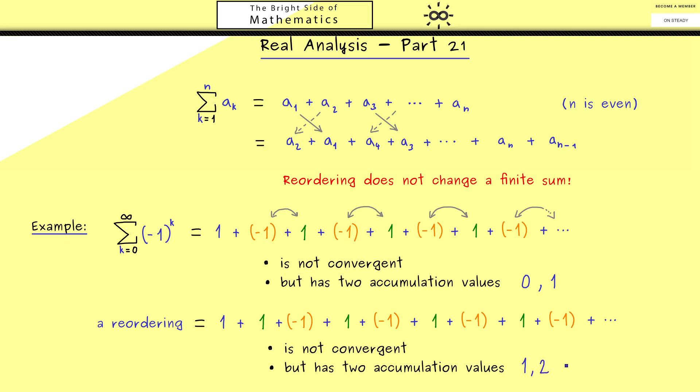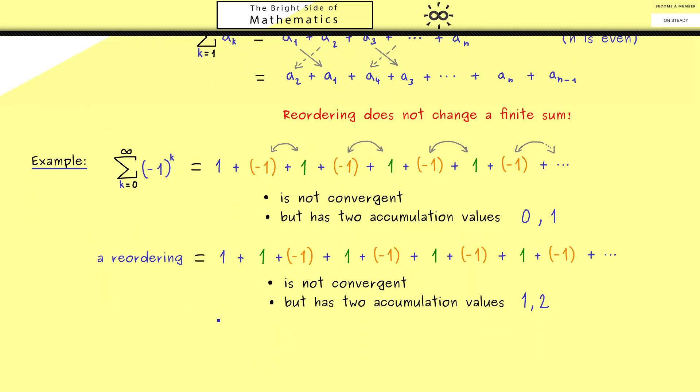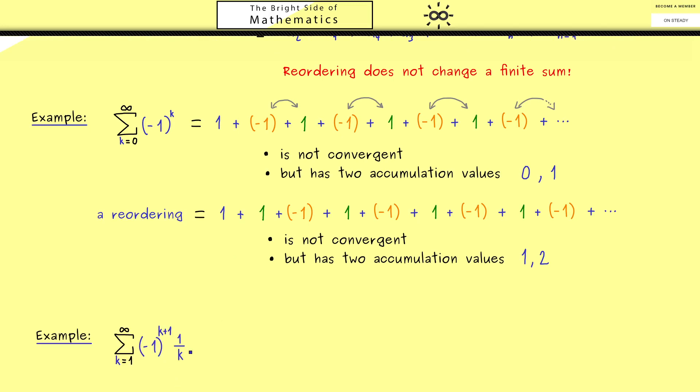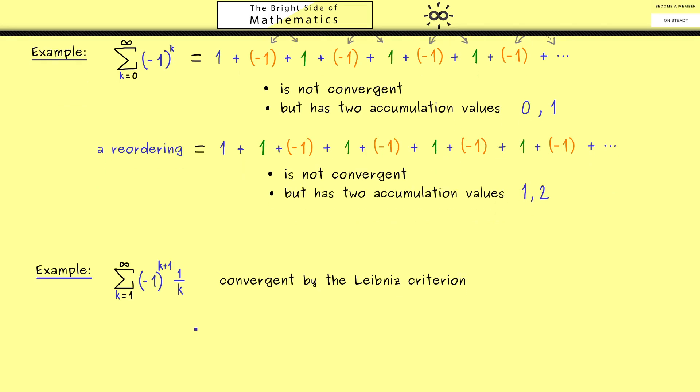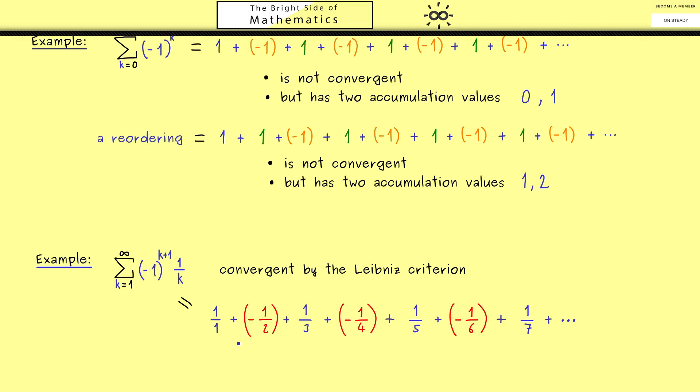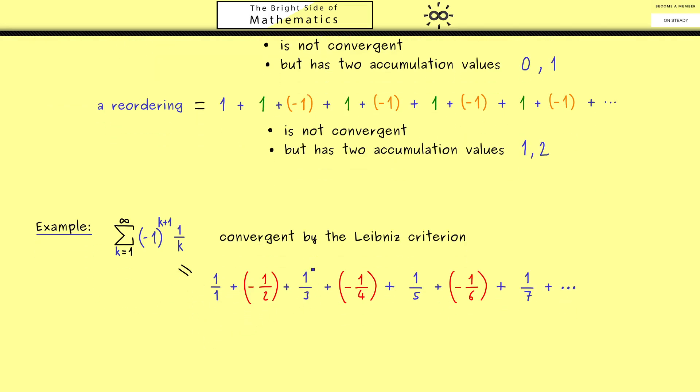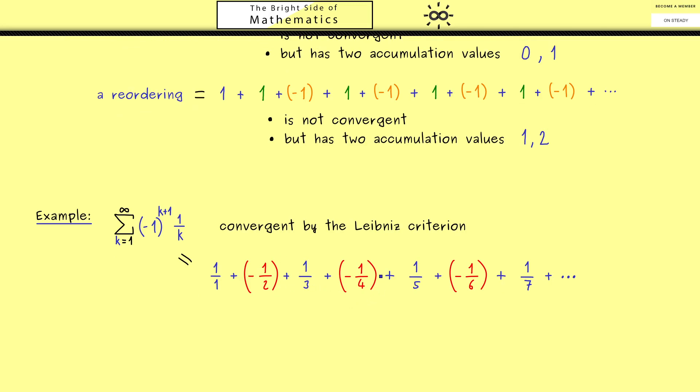The first lesson is always be careful when you reorder an infinite series. Such changes can also happen for a convergent series. Let's consider this example, which is convergent by the Leibniz criterion. The test is applicable because we have an alternating series with a monotonically decreasing part. The series is a positive fraction, negative, positive, negative, and so on.